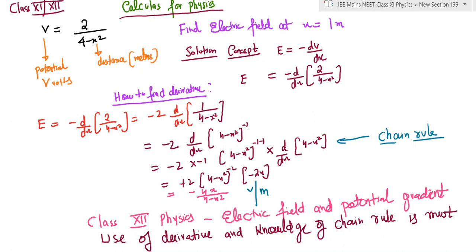Good afternoon and welcome to this video on calculus for physics. The example I've taken, even if you're in class 11 standard you can try and understand this. This is a situation where potential varies with distance and a function is given as V = 2/(4-x²).